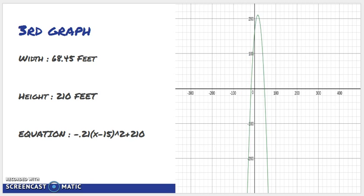The third graph had a width of 68.45 feet. The height was 210 feet and the equation was -0.21(x-15)²+210.